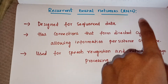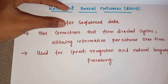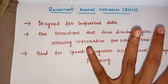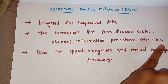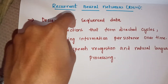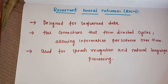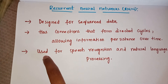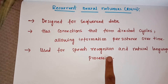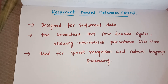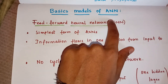Next is recurrent neural networks, also called RNN. It is designed for sequential data — the data is in a sequenced form, not separated. It has connections that form directed cycles, allowing information persistence over time. Basically, where is RNN used? It is used for speech recognition — for example, your Google Assistant uses recurrent neural networks. It is used for speech recognition and natural language processing (NLP). Wherever voice recognition is needed, we use RNN. These are the basic models of ANN and I hope it is clear. Thank you.